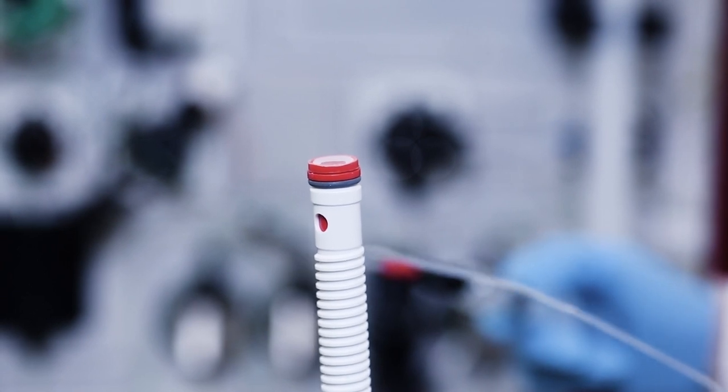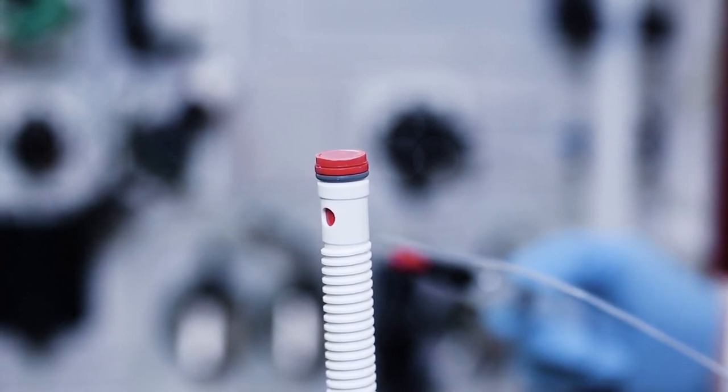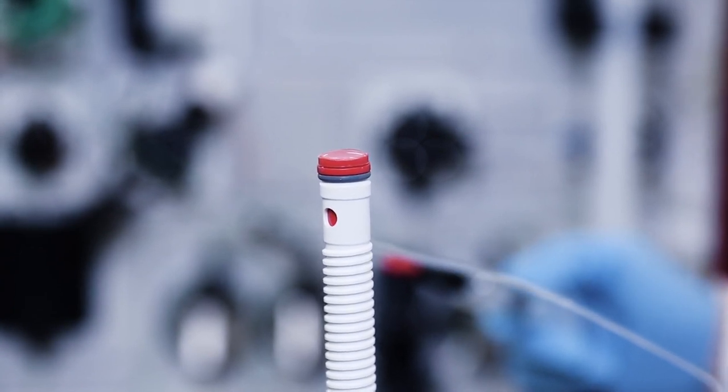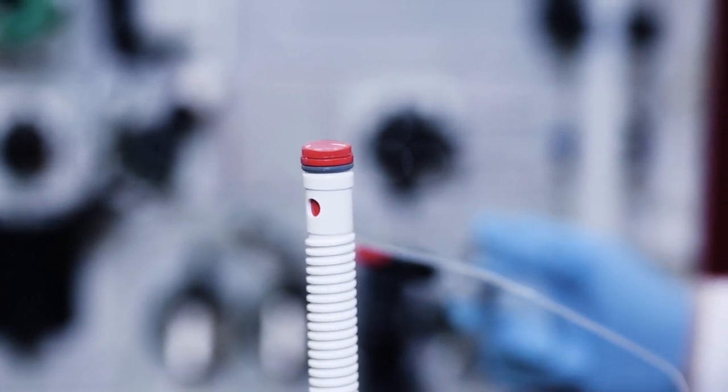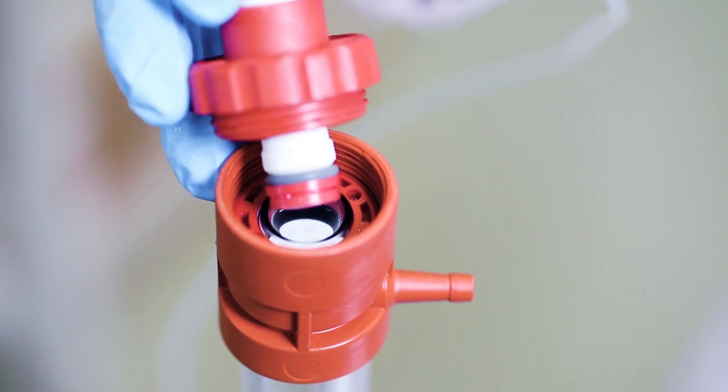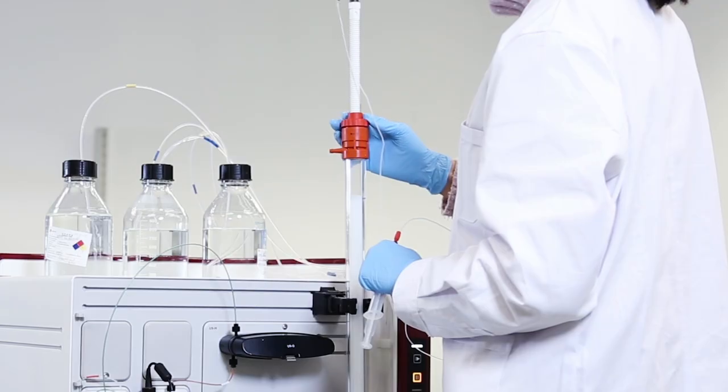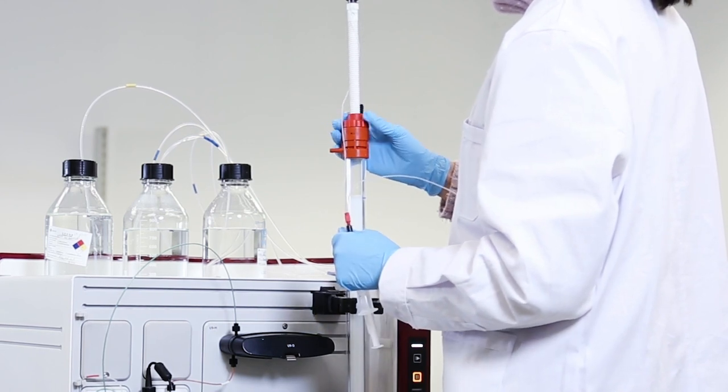Remove air in the adapter by injecting 20% ethanol. Let the ethanol stay on the net. Take the top adapter and fit it to the top of the column at 45 degree angle. Avoid introducing air bubbles.